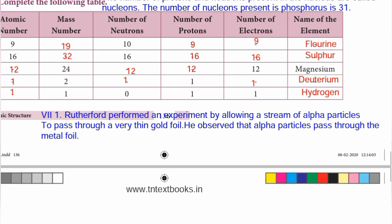Rutherford performed an experiment by allowing a stream of alpha particles to pass through a very thin gold foil. He observed that alpha particles pass through the metal foil. That is the answer for question number 1.